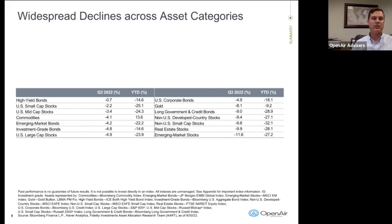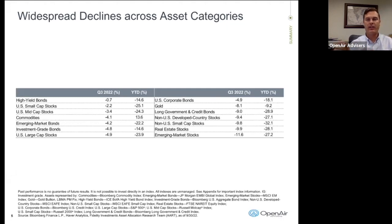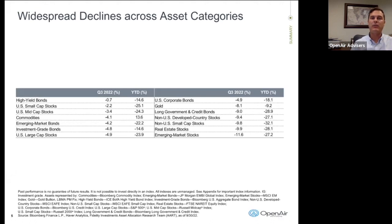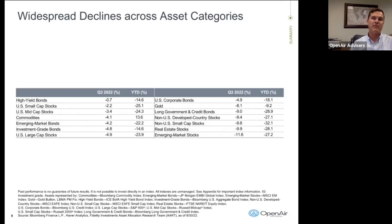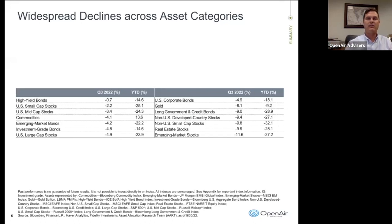If we look at large cap U.S. stocks, they're down about 24% as of October 30th. U.S. corporate long-term bonds are down equally, or actually more than large cap stock. So we're seeing declines on both sides of the balance sheet. This is one of those time periods in a cyclical bear market where we see rising inflation and rising rates hitting both sides.